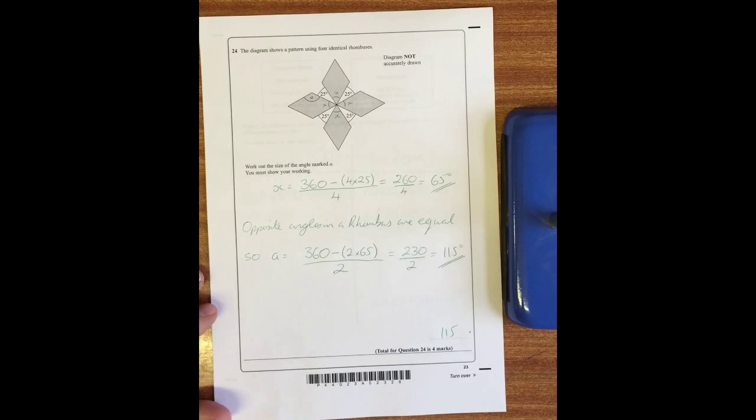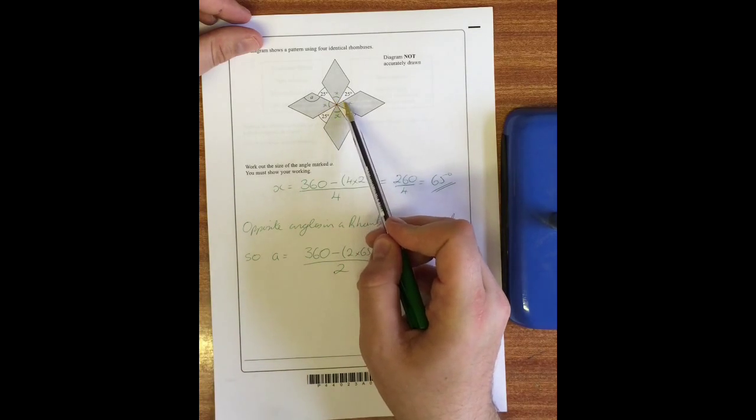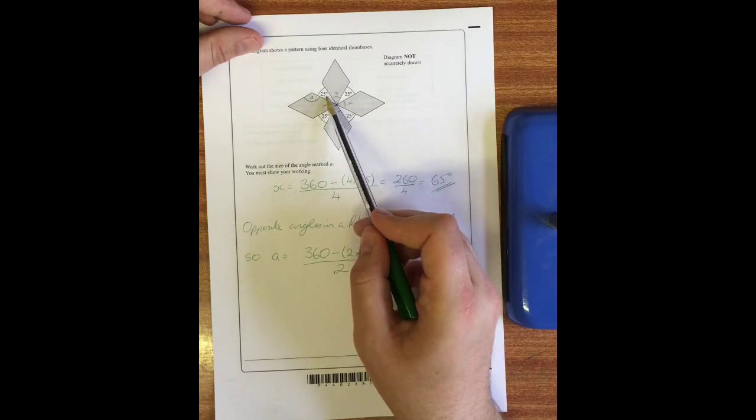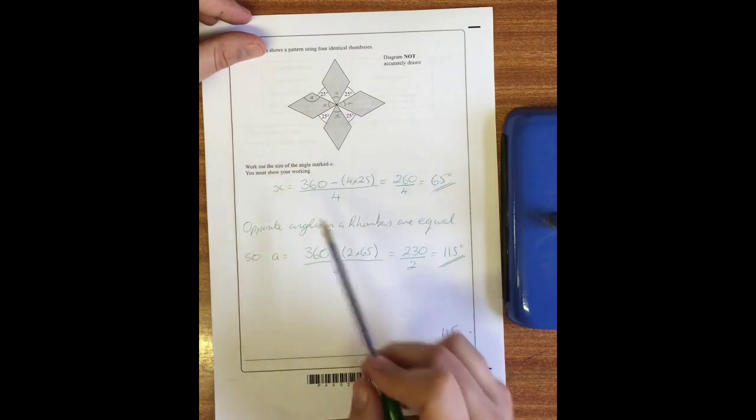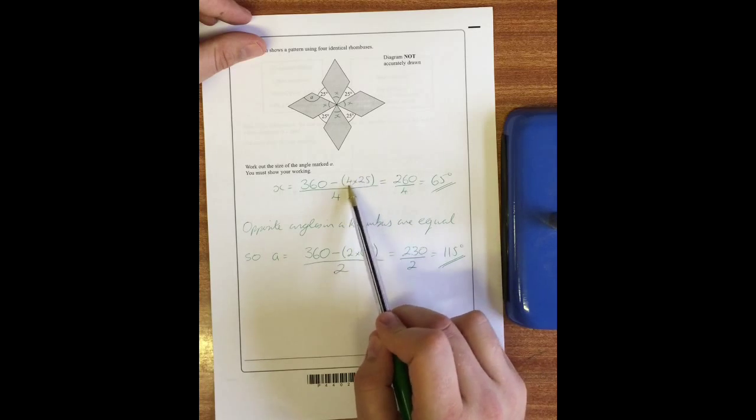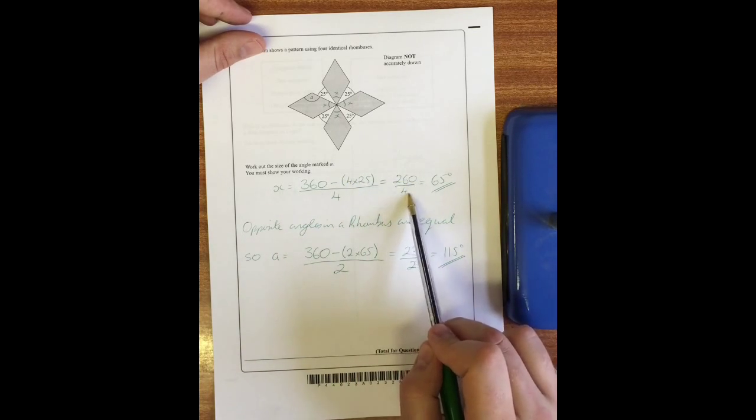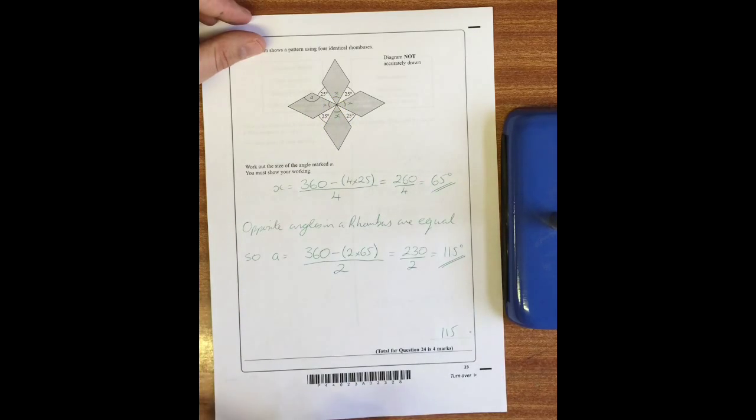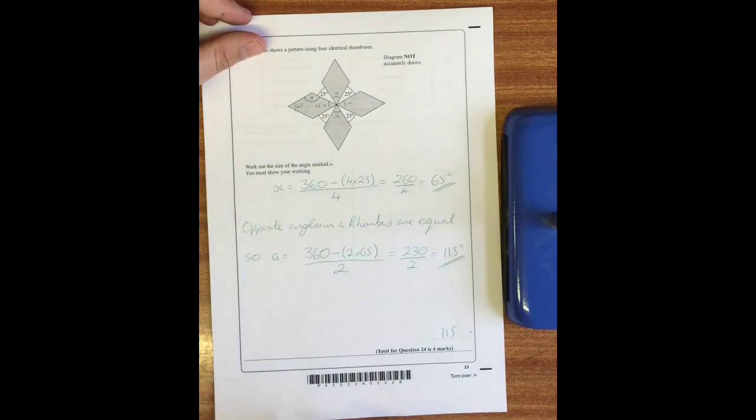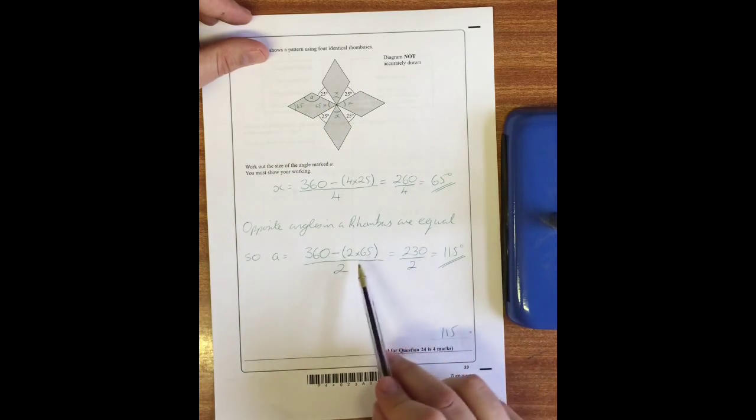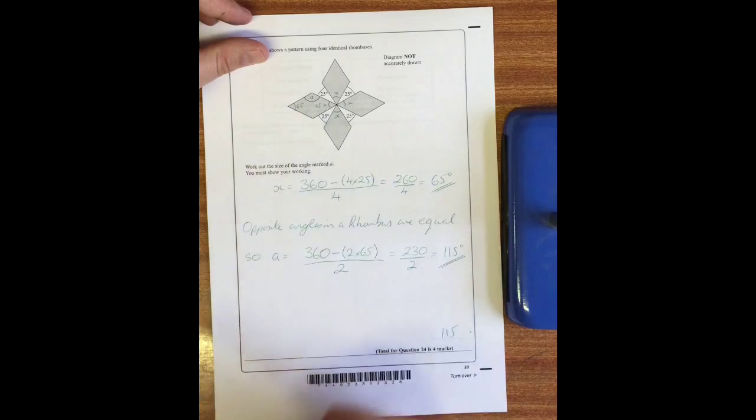Question 24: the diagram shows a pattern using four identical rhombuses. Work out the size of the angle marked here. Well first of all we can work out this angle that I've marked x. We know that a full circle adds up to 360, and if we take these four lots of 25 off 360 and then divide it up into four pieces for these x's, then we can work out that 360 minus four lots of 25 and divide that by 4 is 260 divided by 4 which is 65. So x must be 65. In a rhombus, opposite angles are equal, so if that's 65, so is that. So 65 add 65 is 130, and because it's a quadrilateral, angles in a quadrilateral add up to 360. We could do 360 minus that 130 is 230, then halve it because there are two of these, so that's 115 degrees.